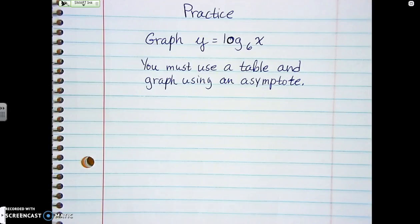If the asymptote's not there, it's going to be wrong. Make sure it's visible that I can see it correctly. Show the asymptote.